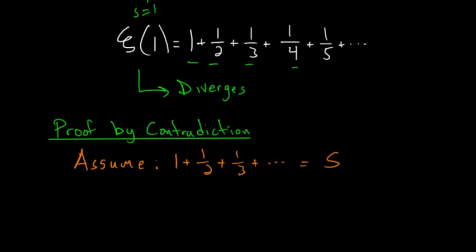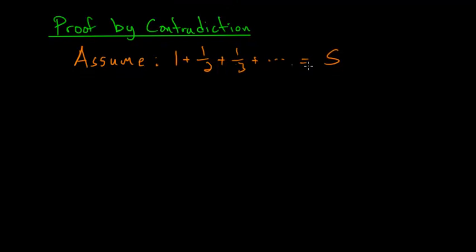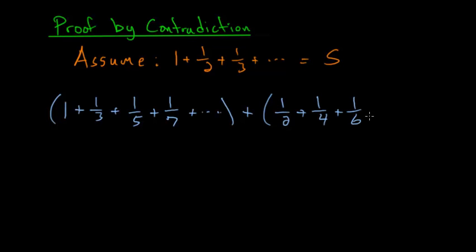So to start this proof let's rewrite our sum in a slightly different way. We have that 1 plus 1 third plus 1 fifth plus 1 seventh and so on plus 1 half plus 1 fourth plus 1 sixth and so on is equal to s. I've essentially just split it up into two separate sums where we have the odd terms here.